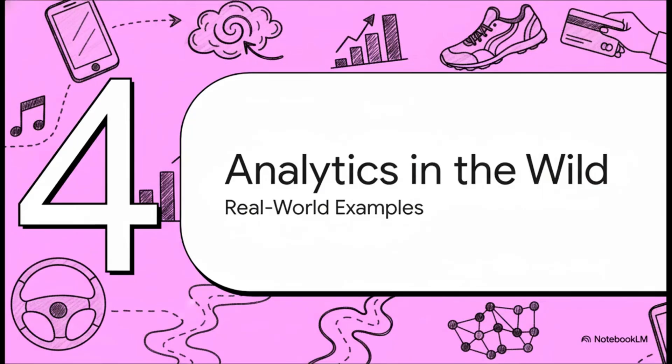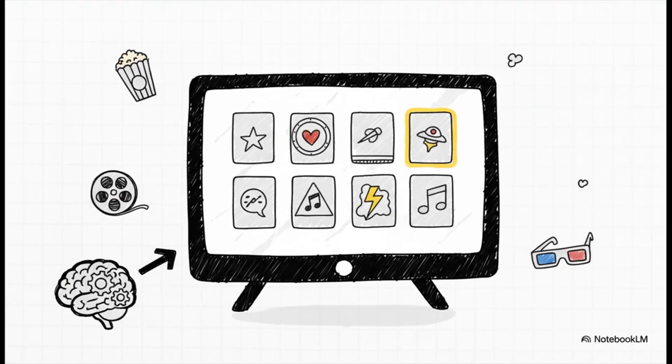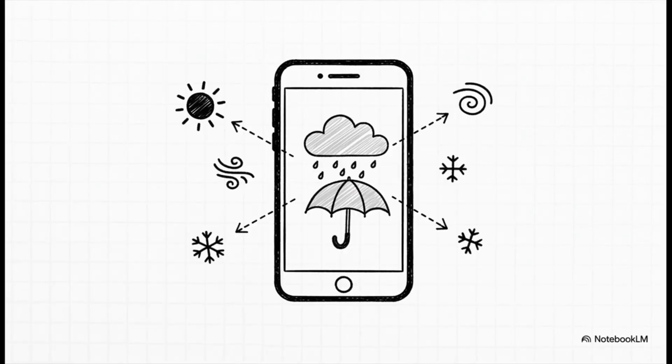And you know, this isn't just for big businesses, not at all. Data analytics is already shaping your world every single day, often in ways you probably don't even realize. Just think about it for a second. Every time your favorite streaming service recommends a movie it thinks you'll love? That is not a random guess. That's data analytics looking at your viewing history to predict what you'll want to watch next. And it's the exact same thing with your weather app. It analyzes these massive amounts of historical data and current atmospheric data just to forecast whether or not you'll need an umbrella tomorrow.